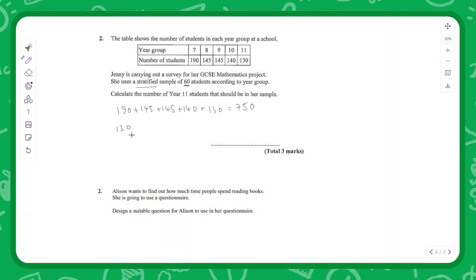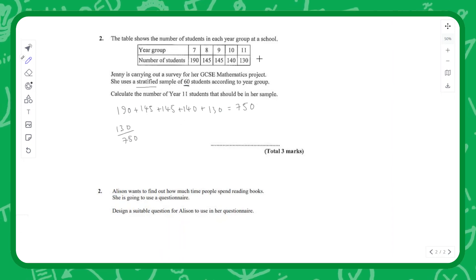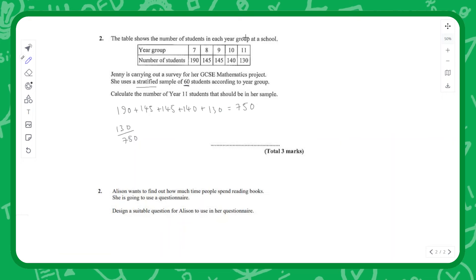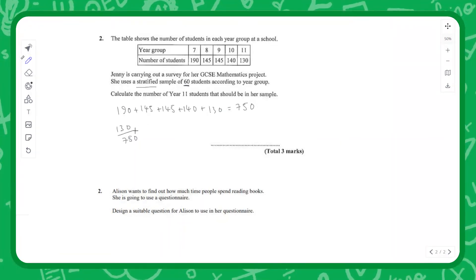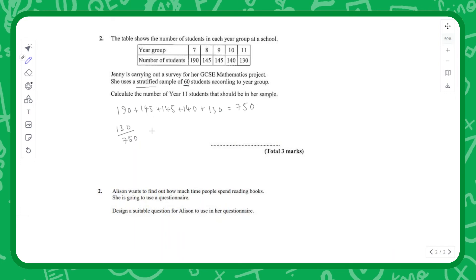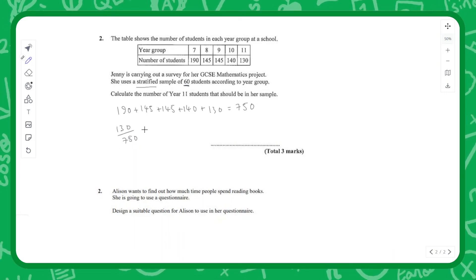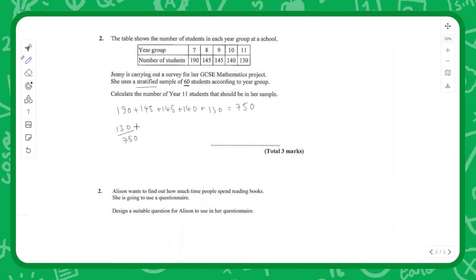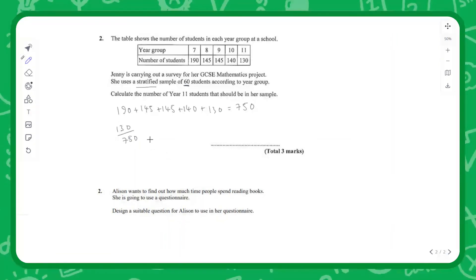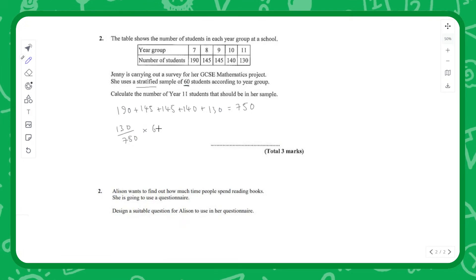We say we've got 130 out of the total of 750. This fraction is representative of the fraction of students that are in year 11. If we want to make sure we have a representative sample of year 11s, we need the same fraction—we need to sample the same fraction of students. We need this fraction of 60 students. The answer to this will give us the number of students in year 11 that we need to sample.